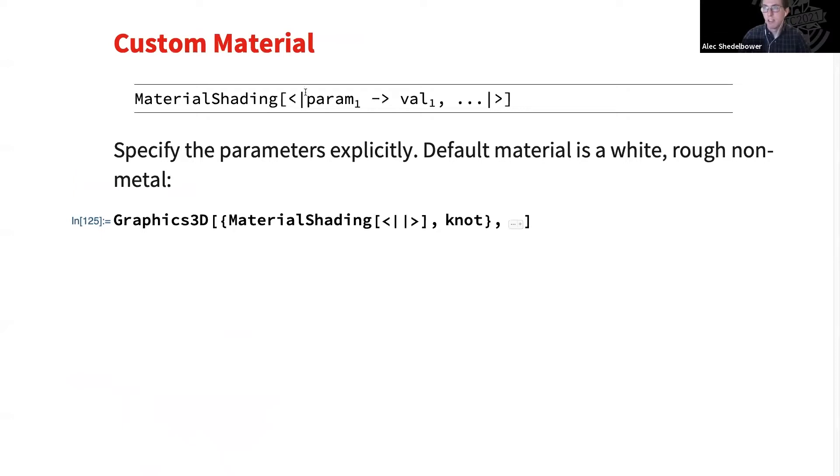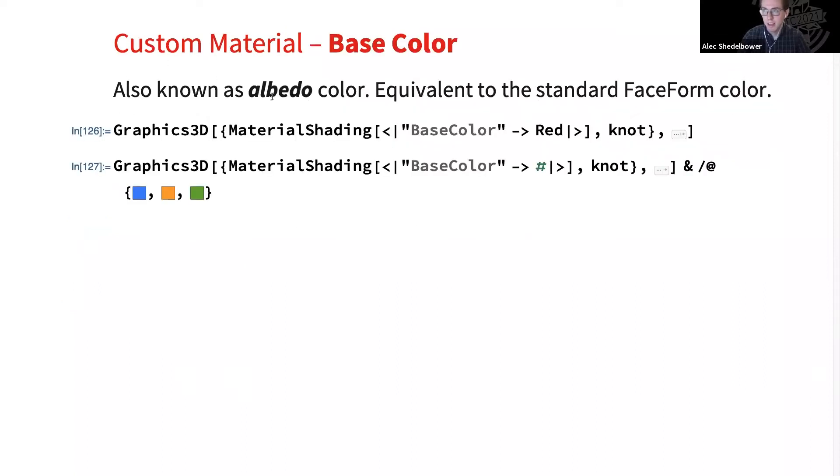In general, if you want to specify all parameters explicitly, you can use this association syntax, where it's an association of the parameters and their values. By default, if you don't pass in any parameters, we just return a surface that is white, diffuse, and non-metal. So this is meant to closely simulate the kind of built-in system shader you're probably familiar with. And it's a nice space to start off with when you start adding more modifications to your material.